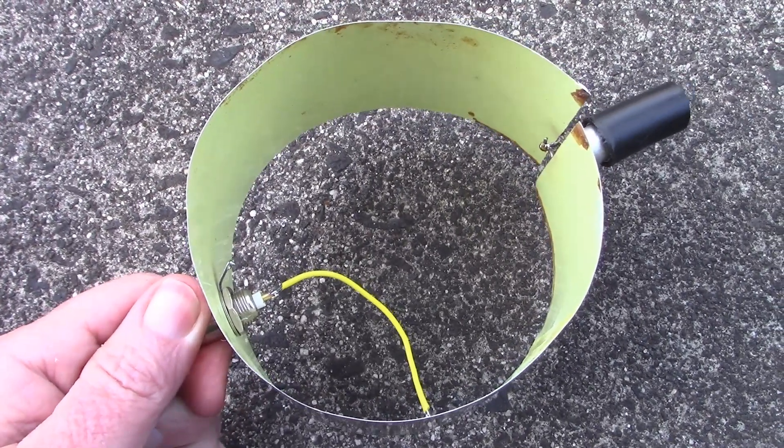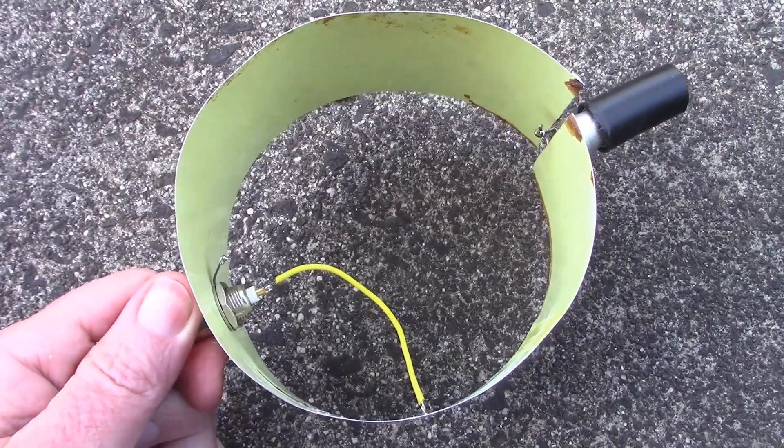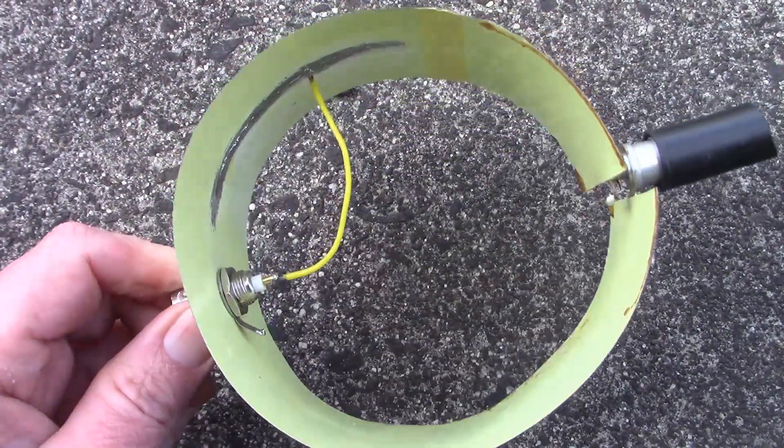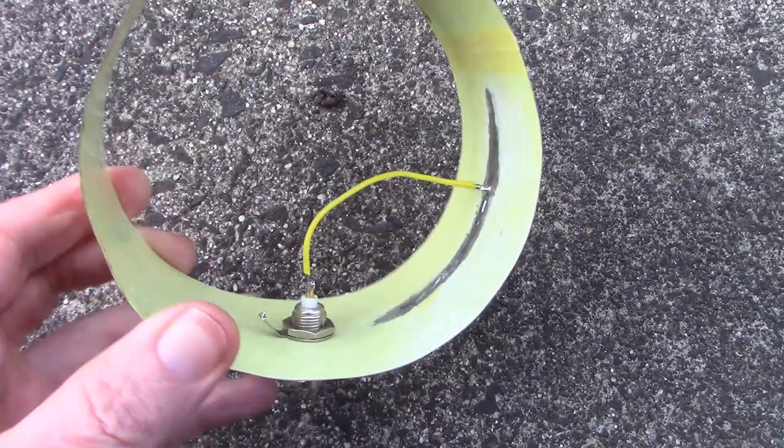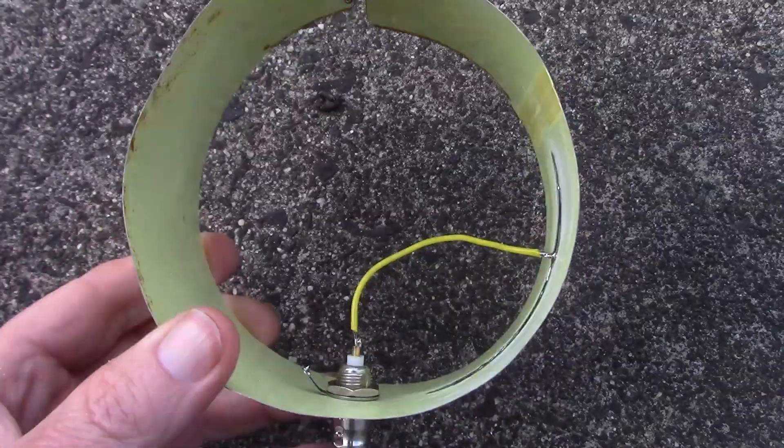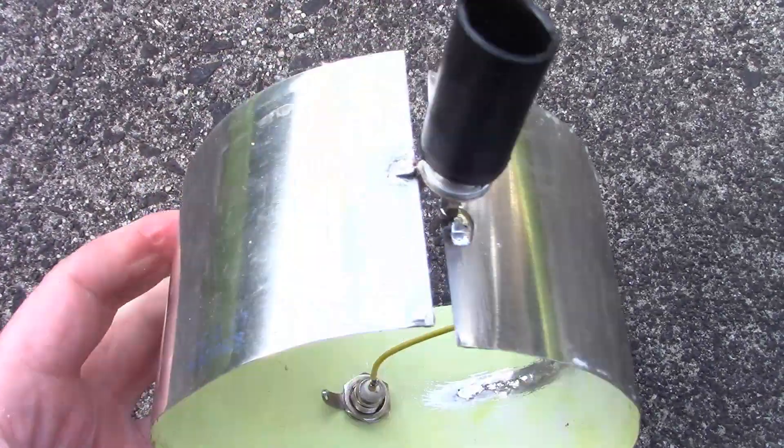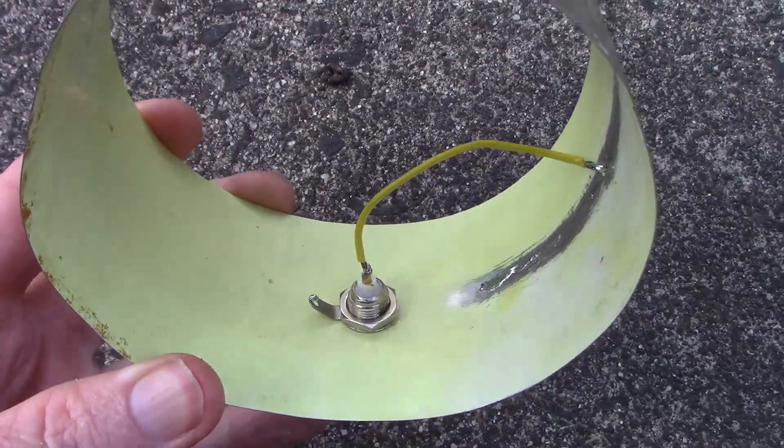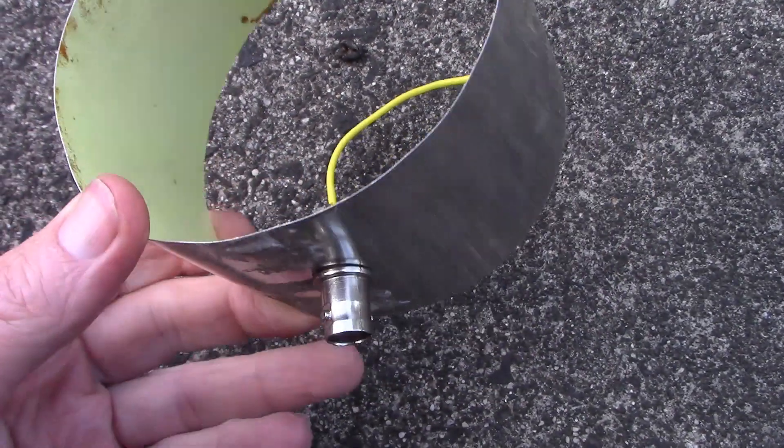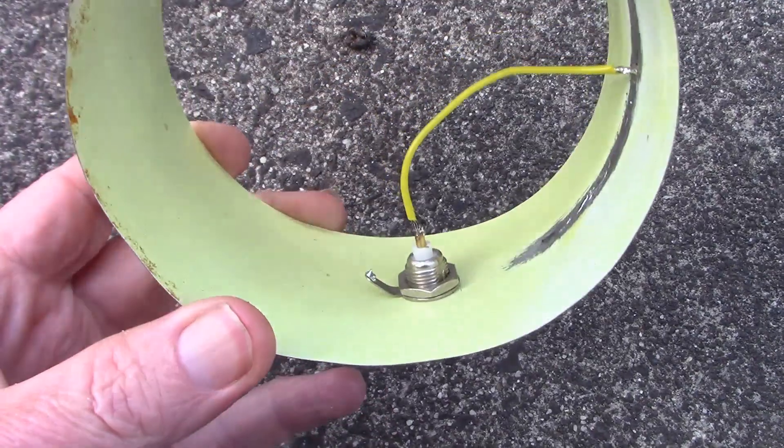This is part of the original tin can antenna coupler, the outer part as you can see here. I just drilled a hole in the middle to accommodate a BNC socket.